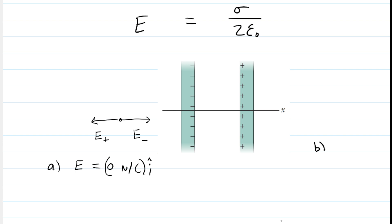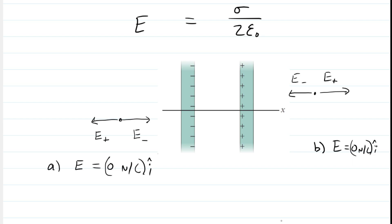For part B, it's a very similar story — now we're on the right side of the sheets of charge. The negative sheet creates an electric field pointing towards the negative, and the positive sheet creates an electric field away from the positive. Those point in opposite directions, so the net electric field is again zero newtons per coulomb. In unit vector notation: 0 î.